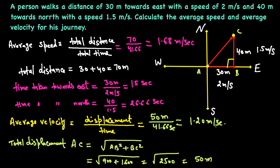That's the key difference between average speed and average velocity: displacement is not the same as distance here because the direction is changing. Alright, that's the first example — let's go over the next one.